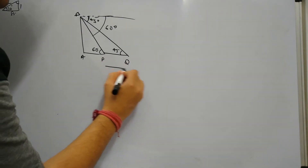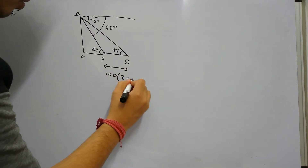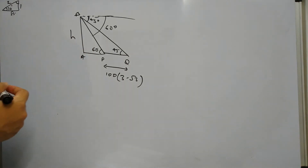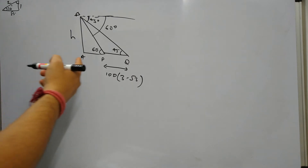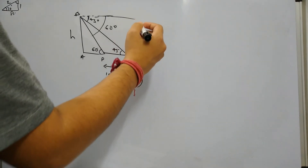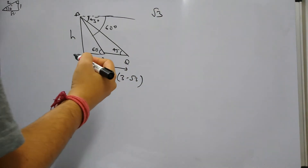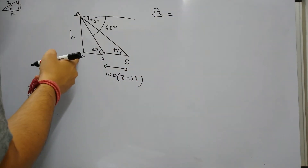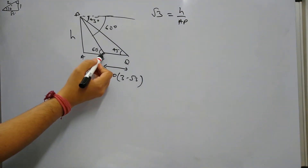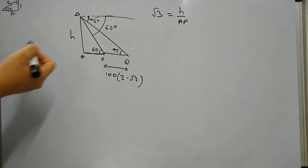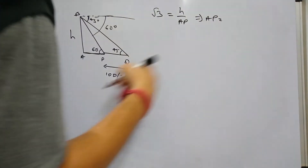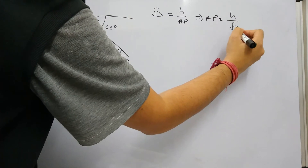It is given that the distance between P and Q is 100√3, and we need to figure out the height of the tower, which is H. If we consider the first triangle ABP and take tan 60°, then tan 60° = √3 equals the perpendicular by base, which is H by AP. So AP = H/√3.